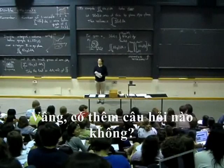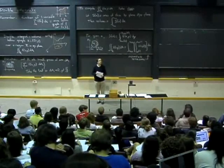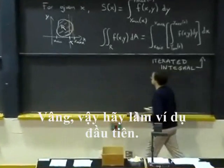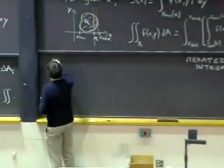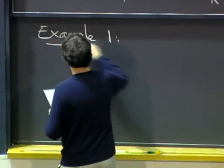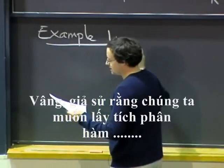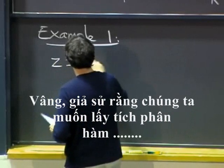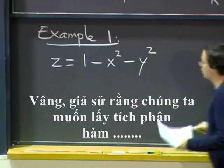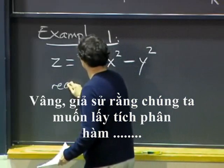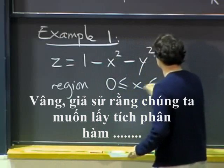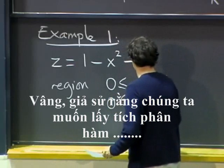OK, no more questions? No? OK. Let's do a first example. So, let's say that we want to integrate the function 1 minus x squared minus y squared over the region defined by x between 0 and 1 and y between 0 and 1.